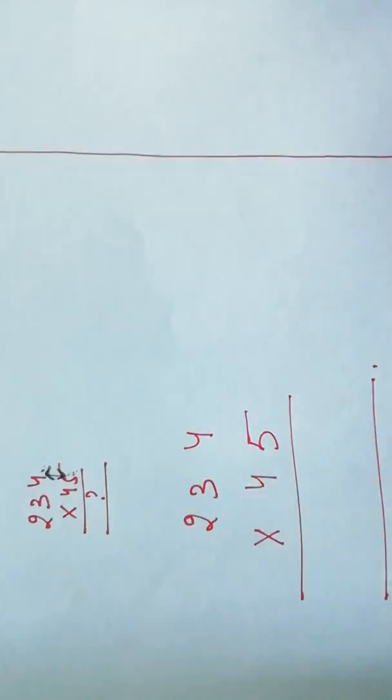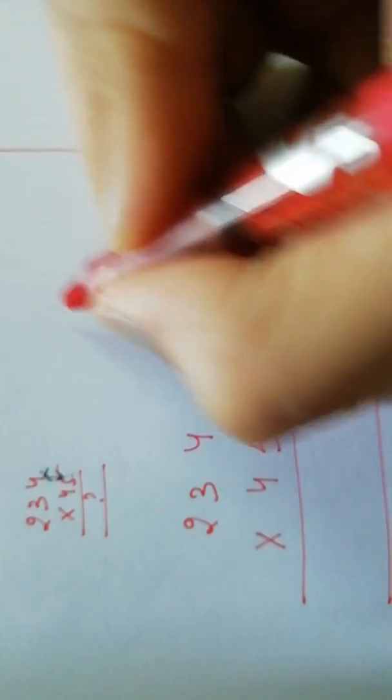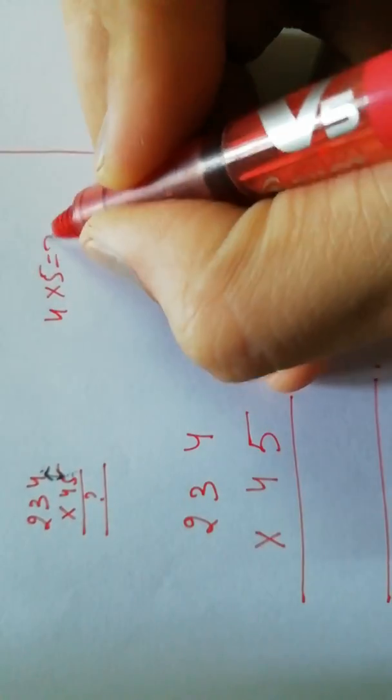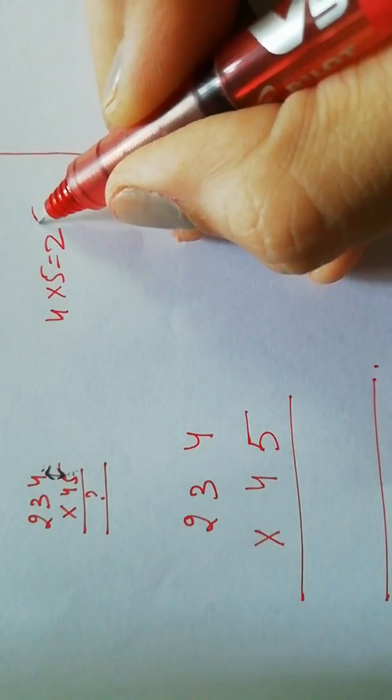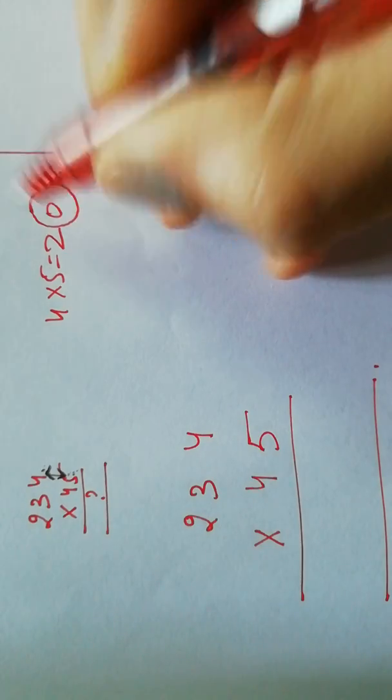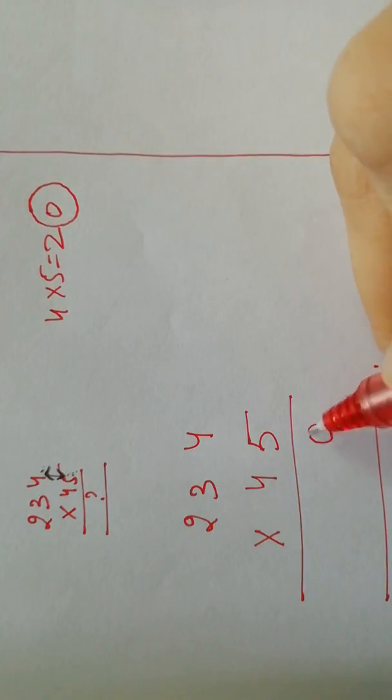So what do we get after multiplying 5 and 4? We get 20. Whatever the units place of this number is, it will come under these two numbers, and the tens place will be considered in the column of carry, which is 2 in this case.